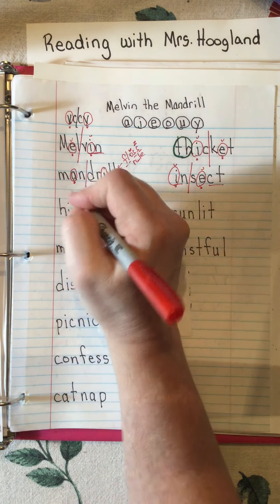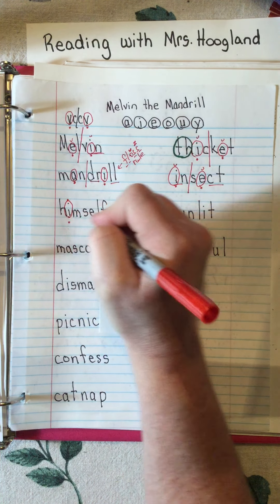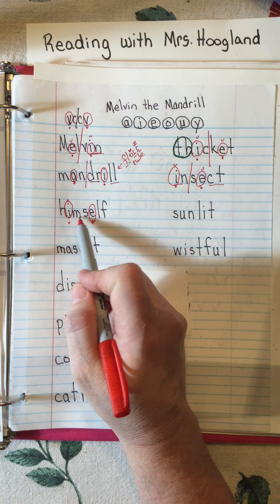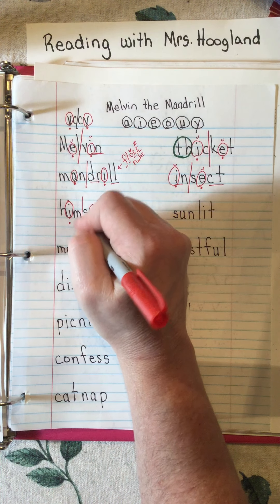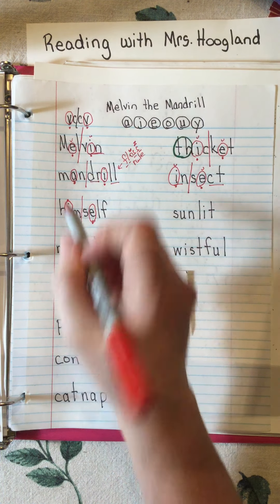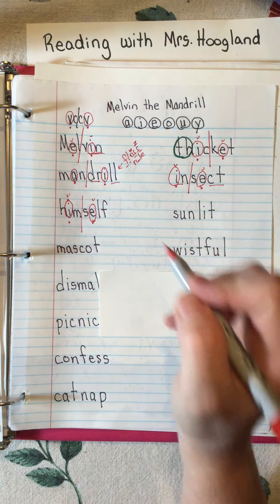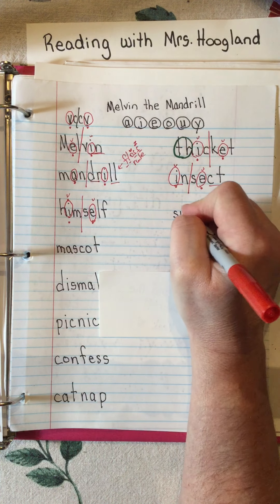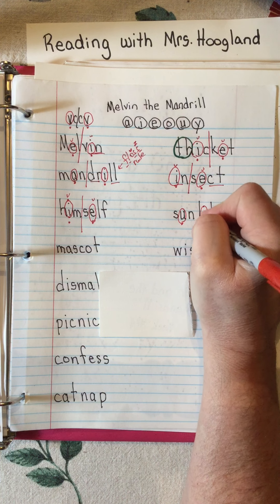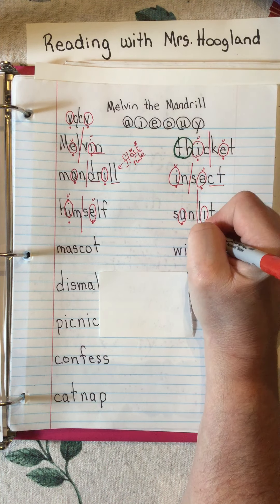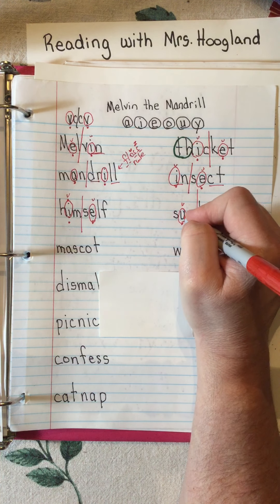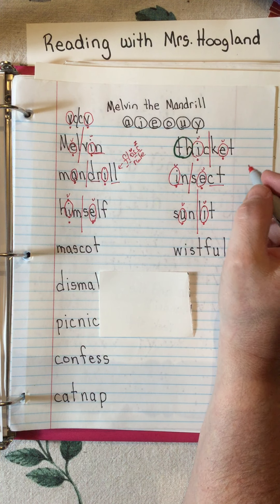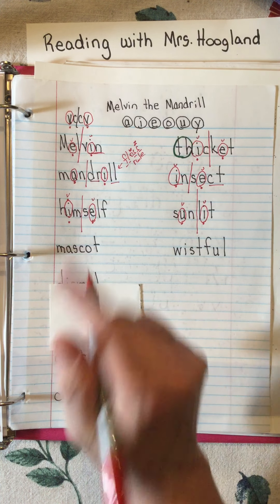The next word is a compound word you probably already know as a sight word. We have vowel-consonant-consonant-vowel, we split it and it works: 'him-self.' The next one has two vowels with two consonants in the middle - split it. It's a closed syllable because the N is closing the U: 'sun-lit.' Sunlit!